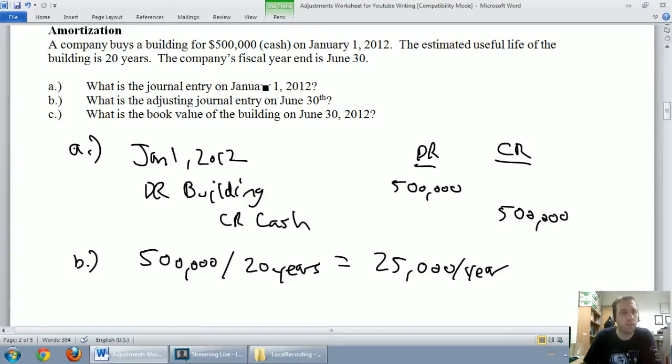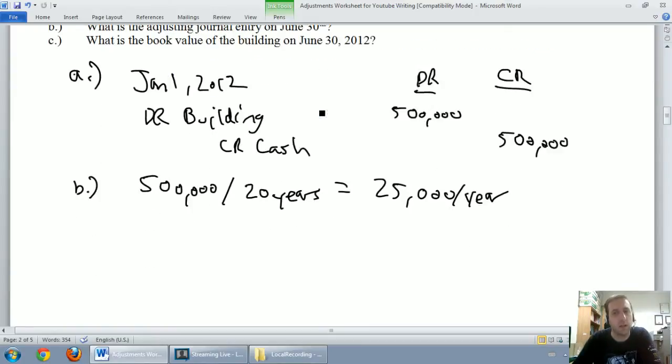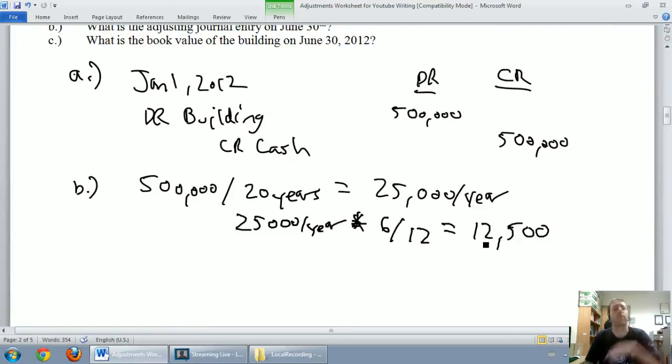Too bad we're not looking at a full year. Our fiscal year end is June 30th, so January 1st to June 30th means we're only looking at six months out of the year. So what I'm going to do is say, it's a $25,000 per year amortization rate, but I'm not looking at a full year. I'm looking at six out of the 12 months in a year. So I multiply by six twelfths, or half a year. It's half a year's worth of amortization. $25,000 times six out of 12 is $12,500. This is the amount of our amortization for this half year.